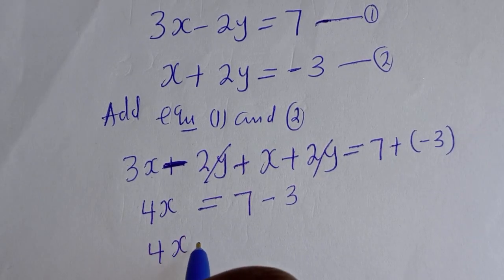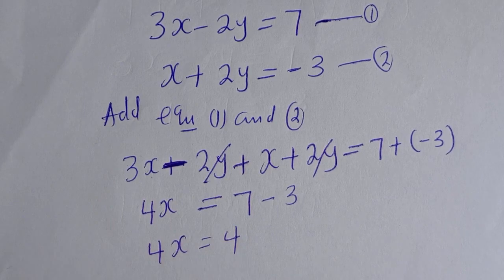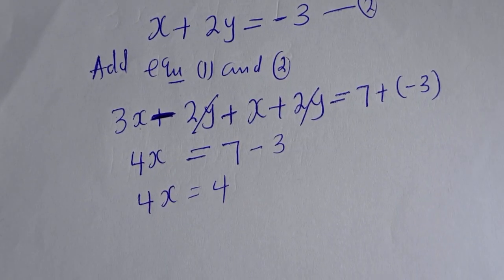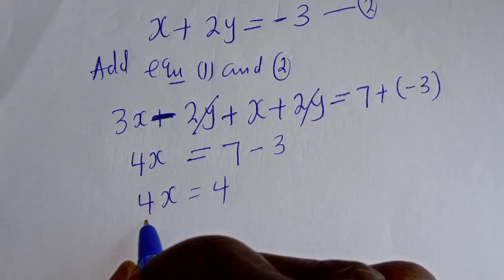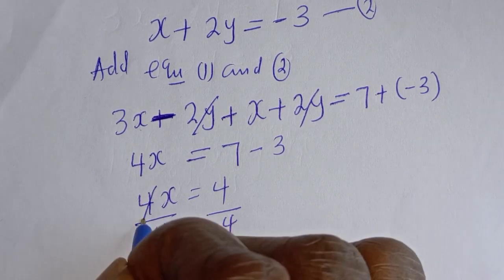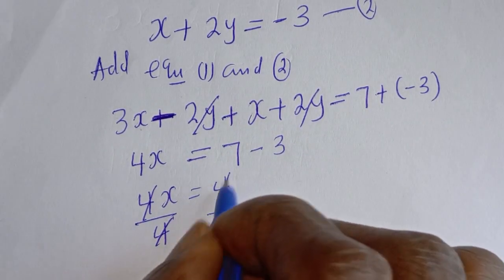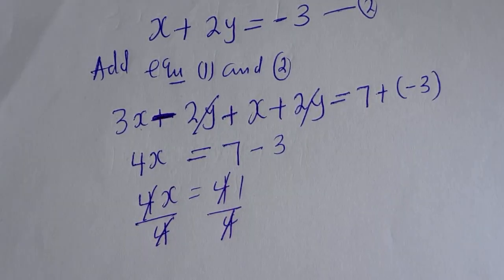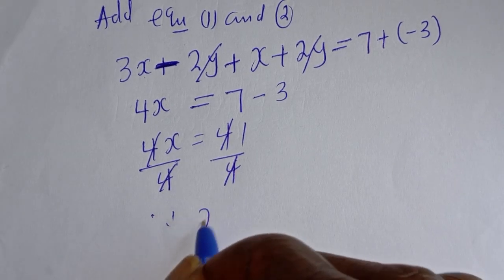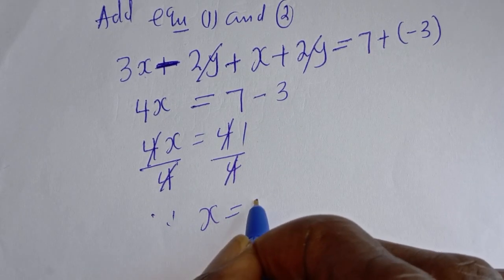4x is equal to 4. Let's divide both sides by 4. Therefore x is equal to 1.